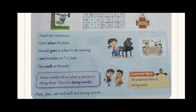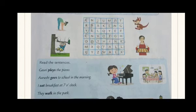Now let's look at some more sentences given here. Gauri plays the piano — plays is a doing word, so it is called a verb. Arushi goes to school in the morning — goes is the action done by her. I eat breakfast at 7 o'clock — eat is a verb or action word. They walk in the park — walk is a doing word.